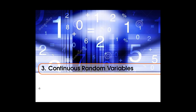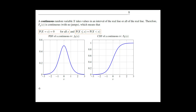Hello everyone, today we will start Chapter 3: Continuous Random Variables. The main difference with respect to discrete random variables is that the PMF is now a continuous function — we now call it a PDF. The CDF also has the same definition as before, but now is a continuous function.